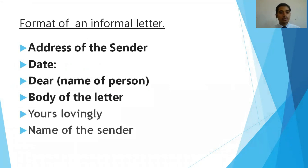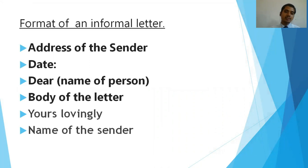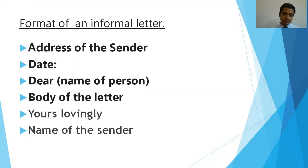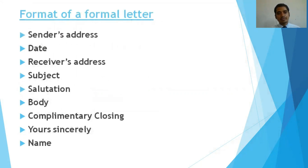For an informal letter, this is the format: you will write down your own address, date, then 'Dear' followed by the name of the person — for example 'My dear friend Abhishek' — then the body of the letter, then 'Lovingly,' and then the name of the sender. At the end, you write down your own name.